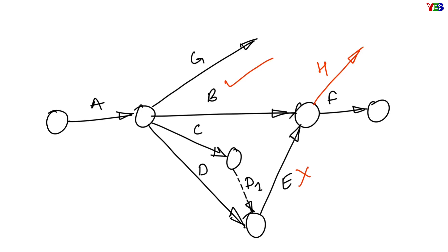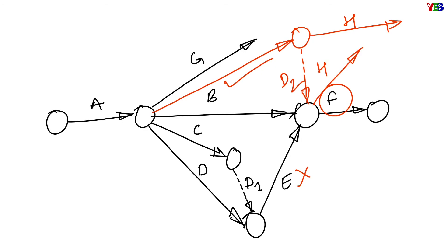to solve this problem, now we will need another dummy activity. We will make a modification by making a different head event of activity B, and we need a dummy activity to show dependency of activity F on this activity B.